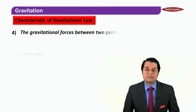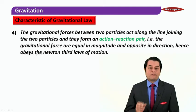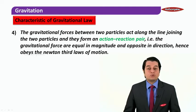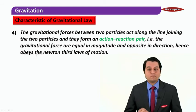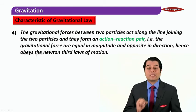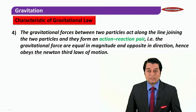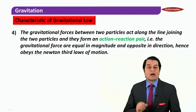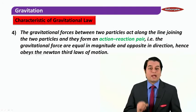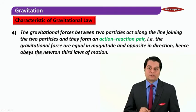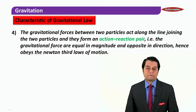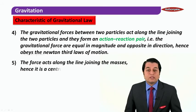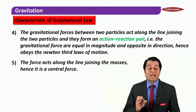The fourth characteristic: the gravitational force between two particles acts along the line joining the two particles and they form an action-reaction pair — that is, the gravitational forces are equal in magnitude and opposite in direction, hence they obey Newton's third law of motion.